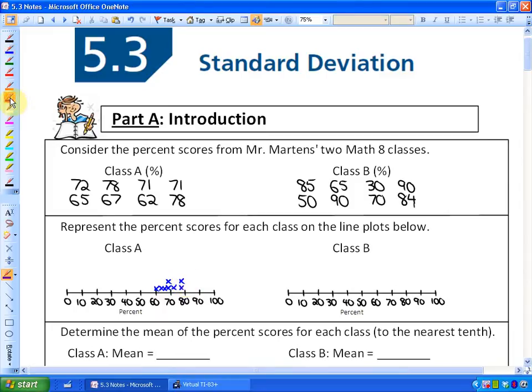Class B, we had a student get 85, a student get 65, a student get 30, 90, 50, another 90, a 70, and an 84. So that's that class. Here's our two classes.